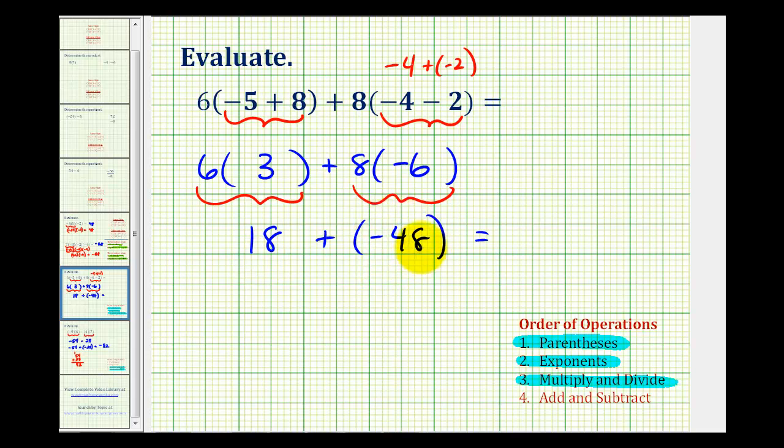And then notice how the negative 48 is going to outweigh the positive 18. So the sum is going to be negative. And now we'll subtract their absolute values. And we'll subtract the smaller absolute value from the larger absolute value.